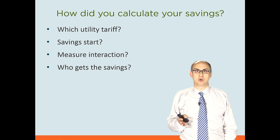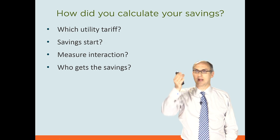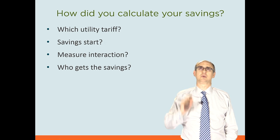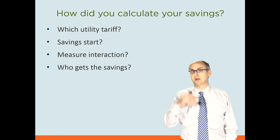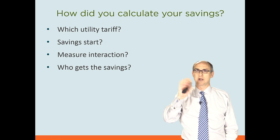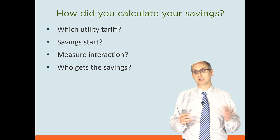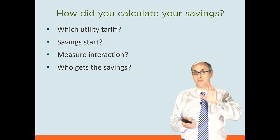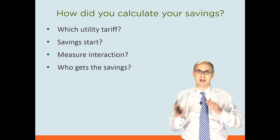When are the savings going to start? And is there any interaction between the measures? If you're putting in a more efficient lighting system with a lower load on the supply conductor, that's one thing. But if you also layer on lighting controls that decrease the time those lights are illuminated by 50 percent, you have to make sure that measure interactions are taken into account. And finally, who gets the savings? In landlord-tenant settings, both parties need to carefully look at how leases are written, which loads connect to which meters, and what the cost to each party will be before and after the retrofit.